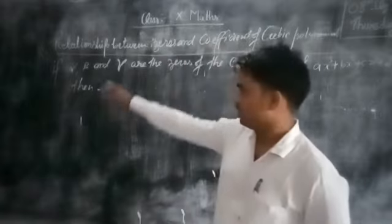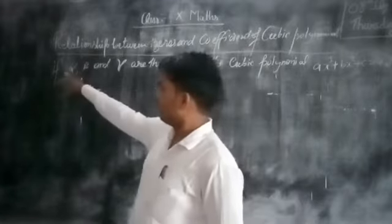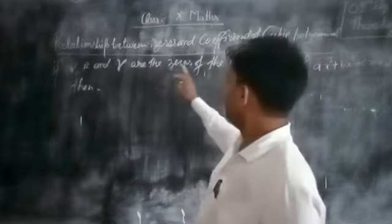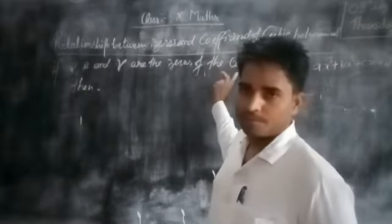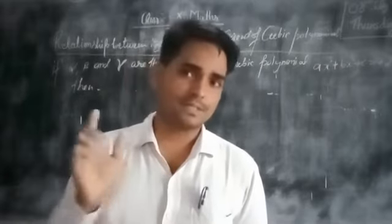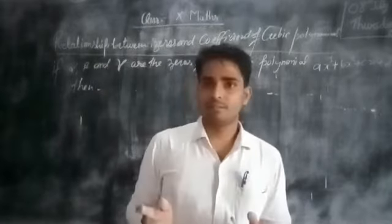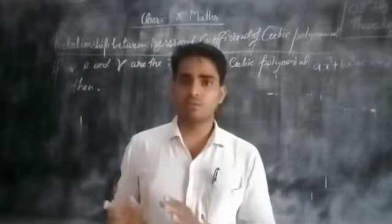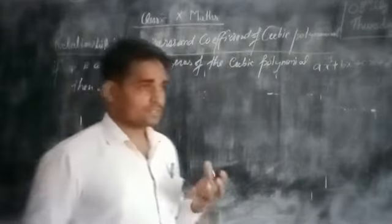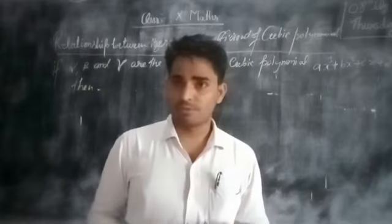So everyone, look here. If alpha, beta, and gamma are the zeros of the cubic polynomial AX cubed plus BX squared plus CX plus D, then we have to find a relation between their zeros and the coefficients. So let us discuss about them — the relationships between the zeros and their coefficients of a cubic polynomial.